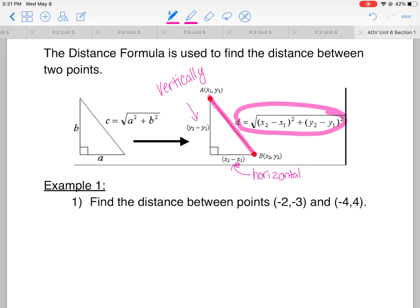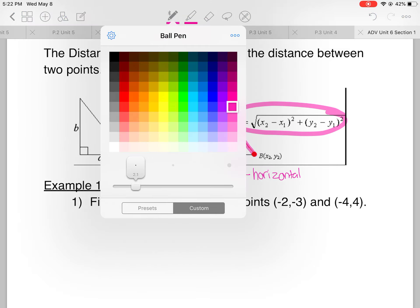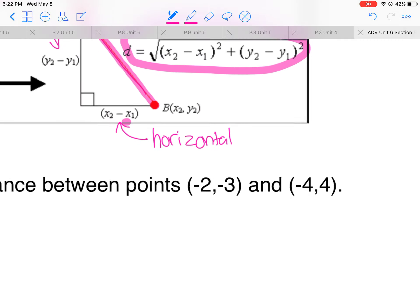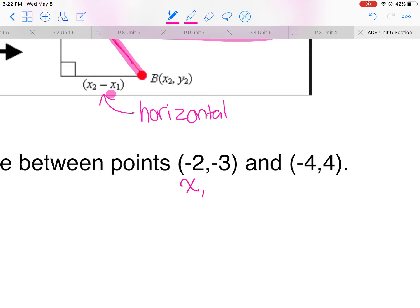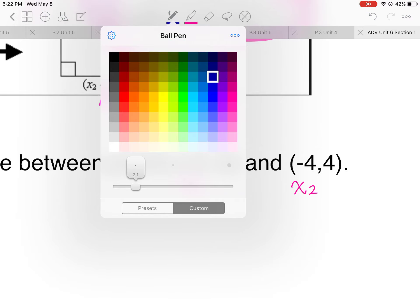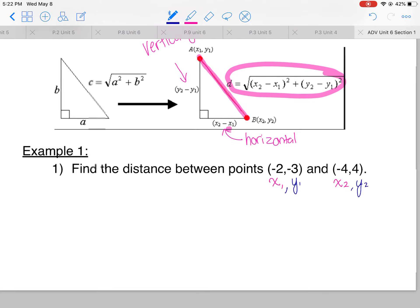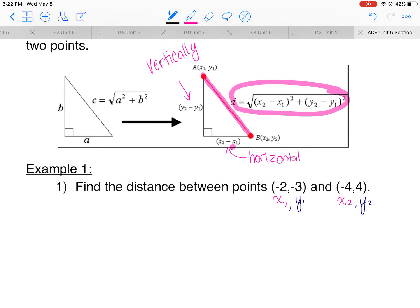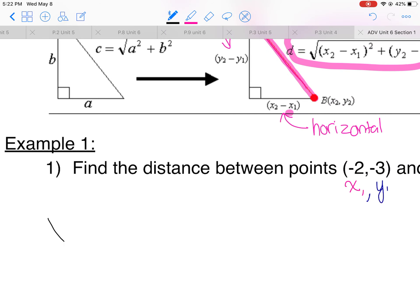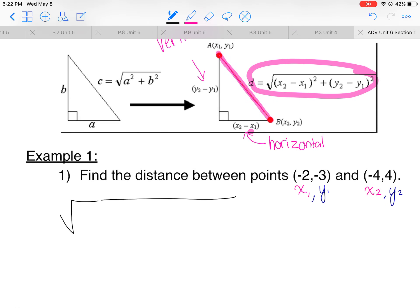So we've got, find the distance between points negative 2, negative 3, and negative 4, 4. Now, I personally like to make my x's one color and my y's another color. It just helps me keep everything organized. Now, I need to write my square root.